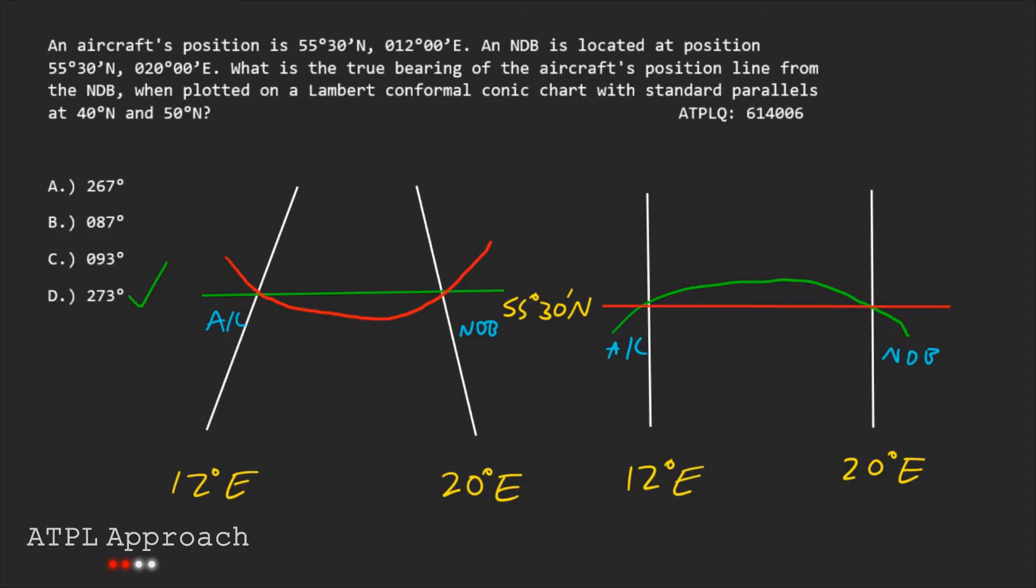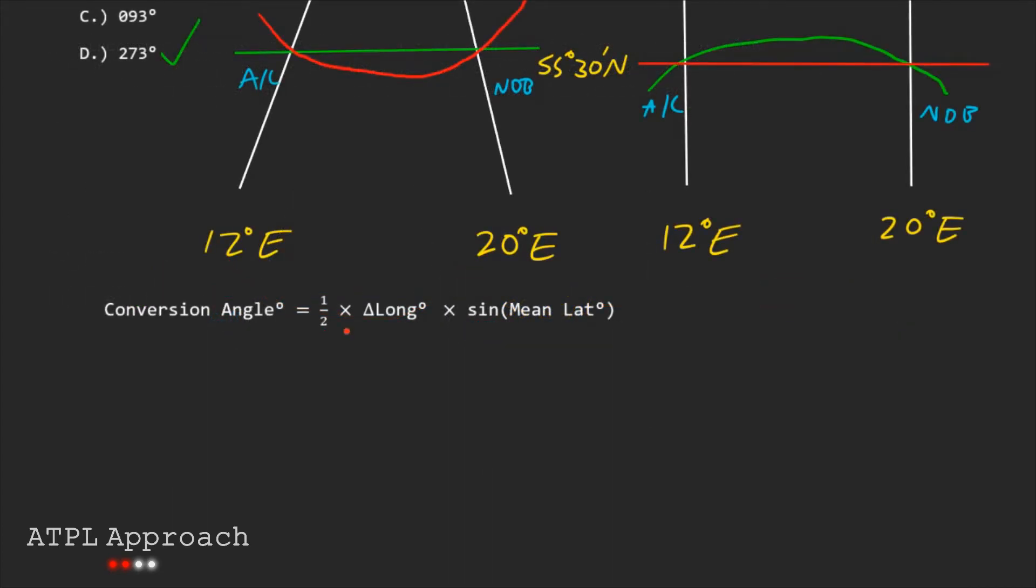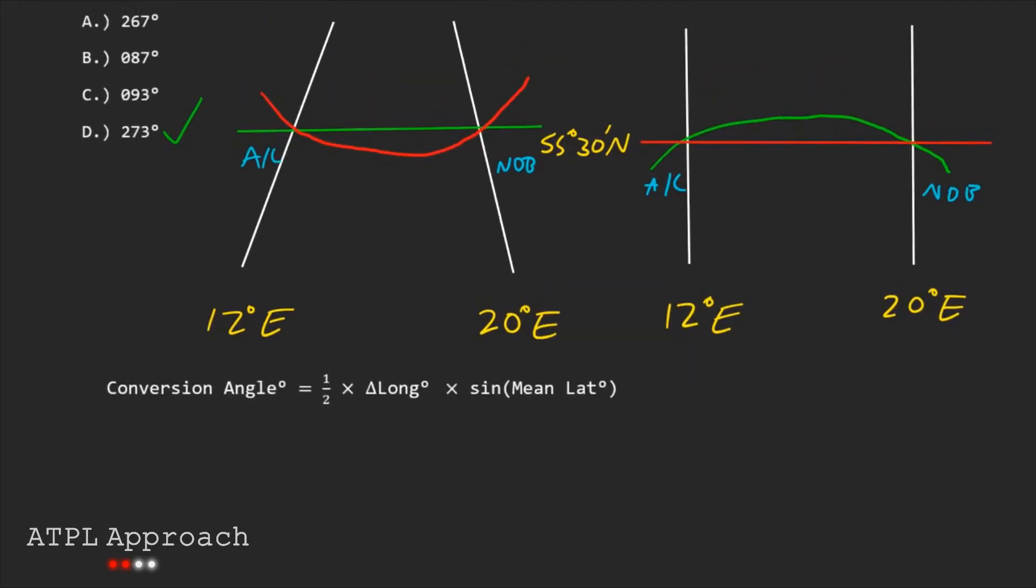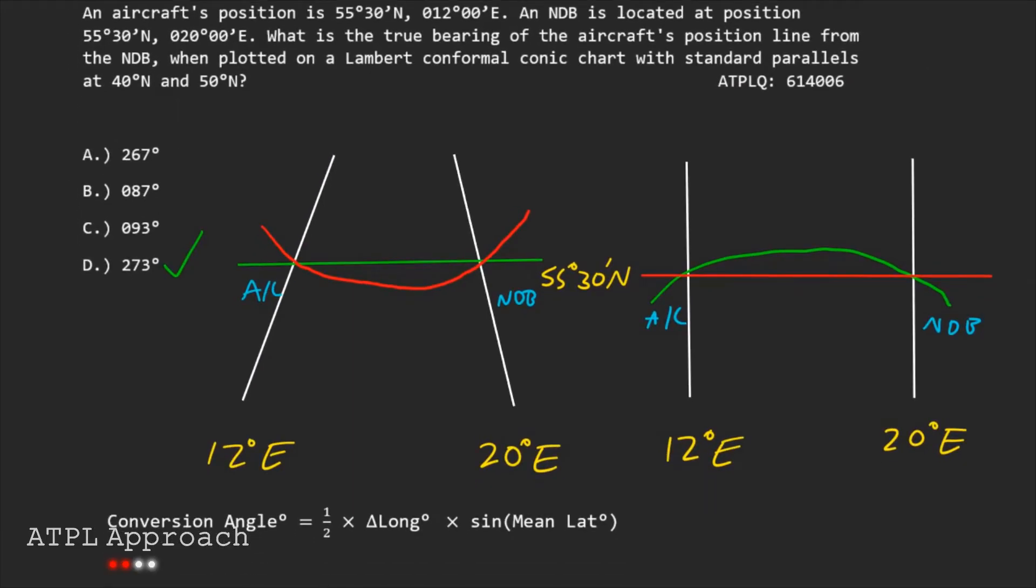But what if this was a type in or you weren't so lucky with the multiple choice answers. So to actually work it out we need to work out this little angle here and that's called the conversion angle and is given by this formula here. We've got half times the change in longitude times the sine of the mean latitude. However this is what works on the globe and we want to work out the true bearing on the chart. We are also given the standard parallels up here and that suggests that we need to be using the parallel origin. The way to work out the parallel origin is to just work out the average of these two numbers and that would be 45 degrees.